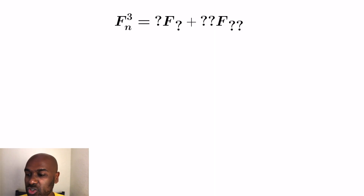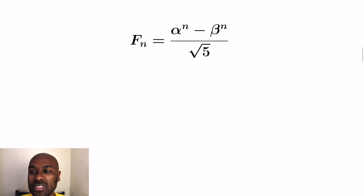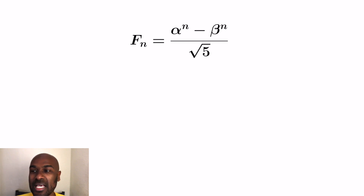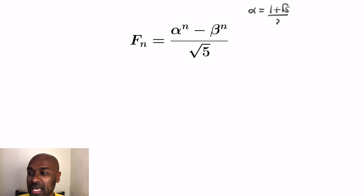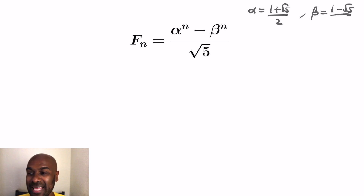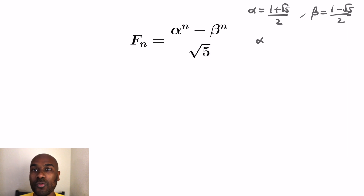So let's go ahead and address our current problem. How do we approach this? Well, the key is using an explicit formula for the Fibonacci numbers in terms of powers of the number alpha, which is (1 + √5)/2, and beta, which is (1 − √5)/2. It turns out the nth Fibonacci number is (alpha^n − beta^n) / √5.